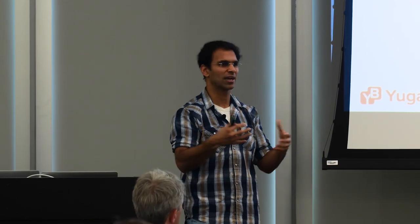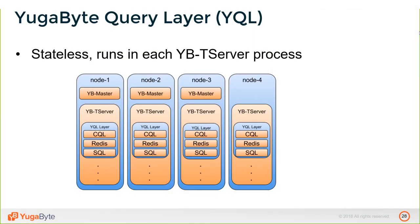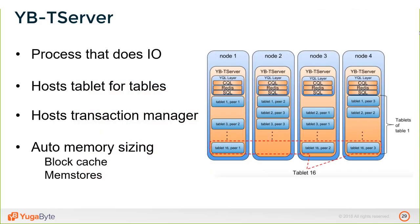The tablet server process is in the critical I/O path — it handles all I/O and hosts many tablets across multiple tables. Each tablet peer it hosts holds a copy of the data. It also hosts the transaction manager, which is responsible for giving a globally consistent view of the table — if you modify two keys atomically in a transaction, you should either see both changed or neither changed.